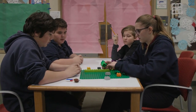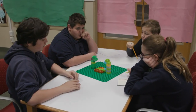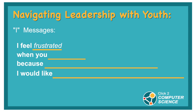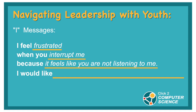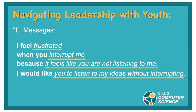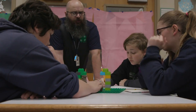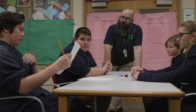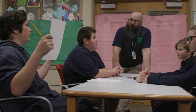Teaching youth how to use I-messages can help them negotiate conflicts and move past them. You explain that an I-message starts out with how you feel: 'I feel blank when you blank because blank.' Then you state what you would prefer happen: 'I would like blank.' An I-message might be, 'I feel frustrated when you interrupt me because it feels like you are not listening to me. I would like you to listen to my ideas without interrupting.' This is a strategy you can teach through modeling. When emotions are high, you need to listen to them first. Don't try to teach a strategy before you've listened to why they are upset.